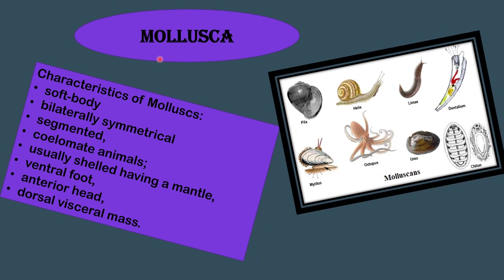The next phylum is Mollusca. Characteristics of molluscs include a soft body, bilateral symmetry, segmented coelomate body, usually shell-bearing with a mantle — a special type of body covering — a ventral foot, an anterior head and a dorsal visceral mass. Examples include Pila, octopus and mussels.